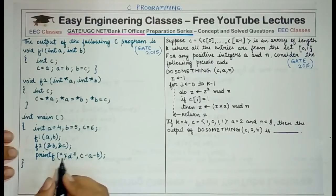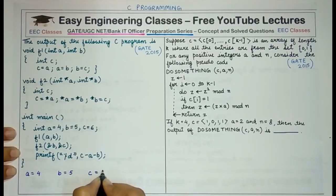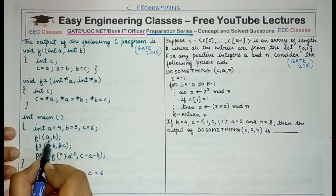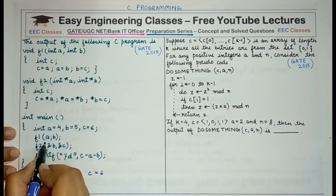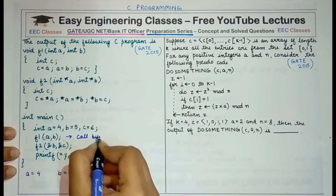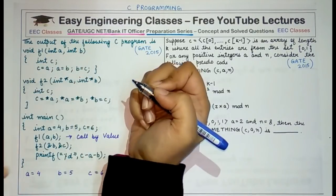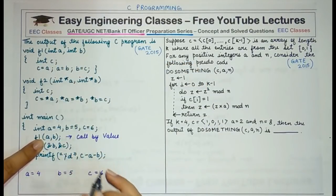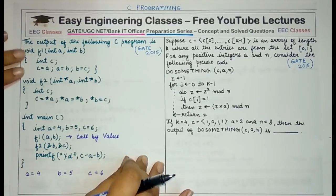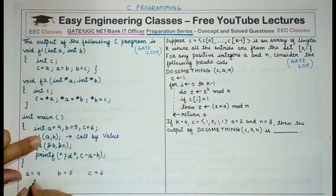Initially in main, the value of a is 4, the value of b is 5 and the value of c is 6. When we make the call to f1, a and b are passed, but since this is a call by value, a copy of these variables is created in the function f1. So the original values of a and b are not affected — no matter what changes are made, the final values of a and b would remain 4 and 5.